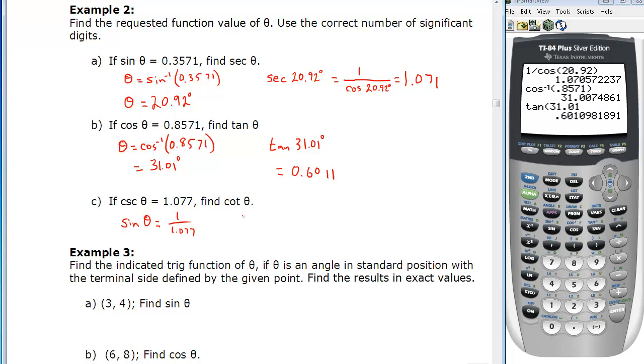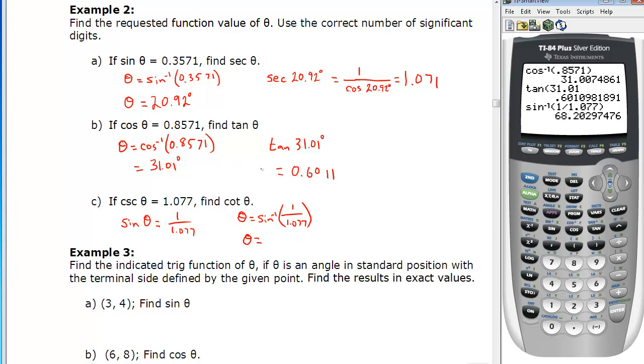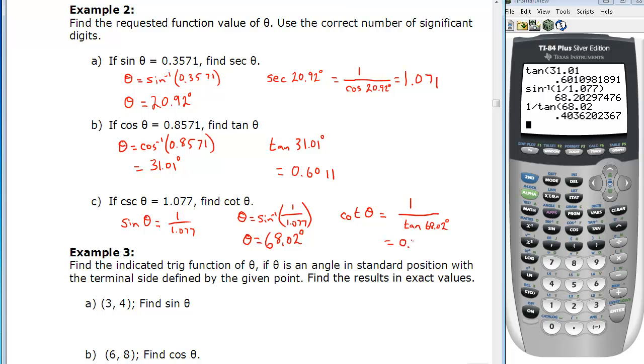So to find theta then, it's going to be the sine inverse of 1 over 1.077. That tells us that theta then is going to be second function sine. So sine inverse of 1 divided by 1.077. And that gives us 68.02 degrees, 68.02 degrees. Don't forget to put degrees. And the cotan of theta then, well, that has to be 1 over the tan of theta. And theta is 68.02 degrees. So 1 divided by the tan of 68.02 is equal to 0.4036 rounded to 4 decimal places, or to 4 significant digits. And so that's example 2.